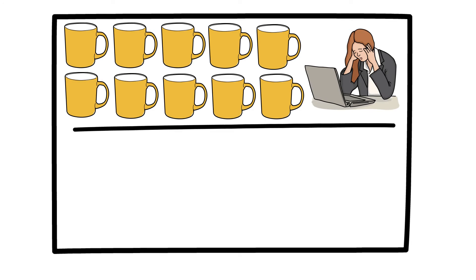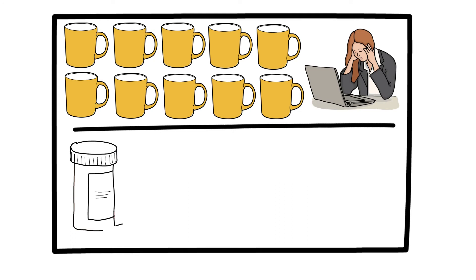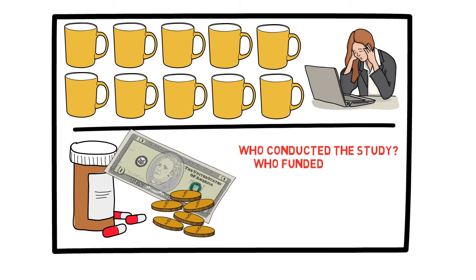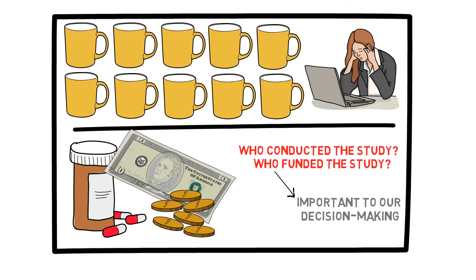Lastly, we have to be careful about the studies themselves. Sometimes, some company has a drug or something, and they fund the study that displays the effectiveness of their drug. So, we also have to think about things such as who conducted the study, who funded the study, and so on. Being aware of such things is also extremely important in improving our decision-making abilities in general.